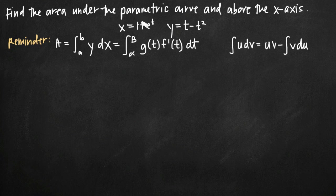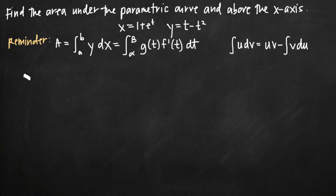With these kinds of problems the first thing we want to do is eliminate the parameter from our equations for x and y, which means removing the t variable and ending up with an equation for y in terms of x. The way that we do that is by solving the x equation for t and then plugging our value for t into our equation for y.